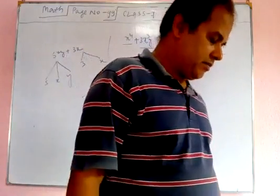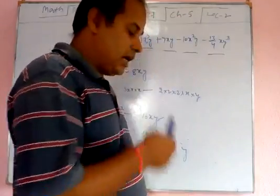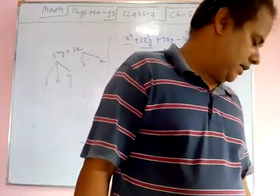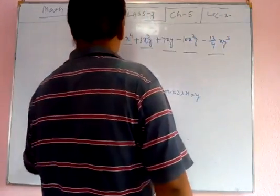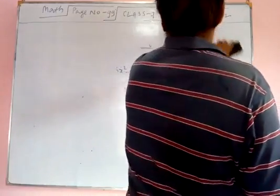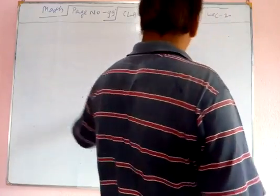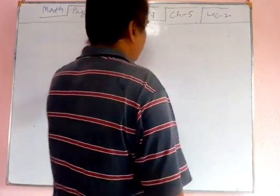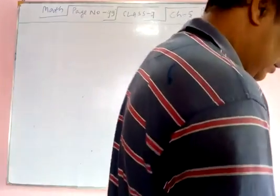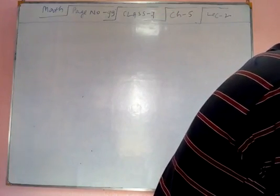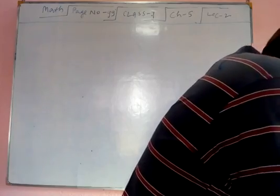Next topic is Powers, page number 99, Arya Bhutipo class 7. As already discussed before, x to the power n is equal to x into x into x into x, n times. So you can write x to the power 5 is equal to x into x into x into x into x, multiplying x itself 5 times. Where x is any natural number and n is any natural number, it is defined as the power of x.